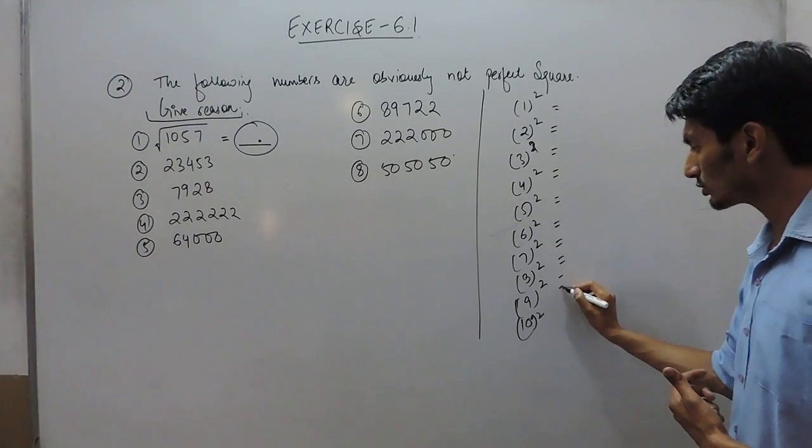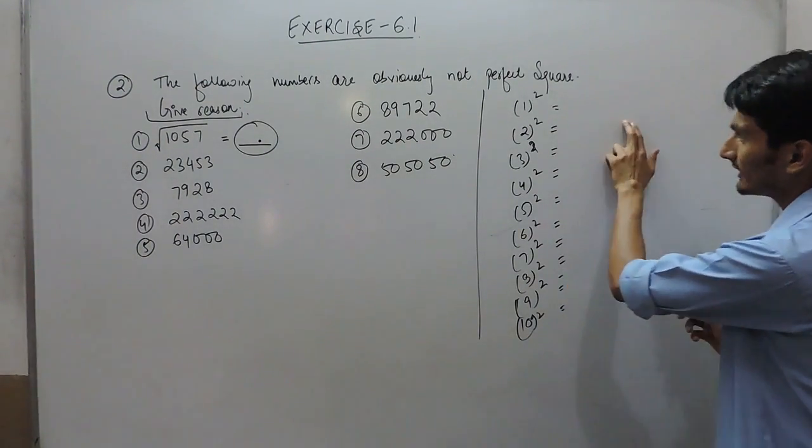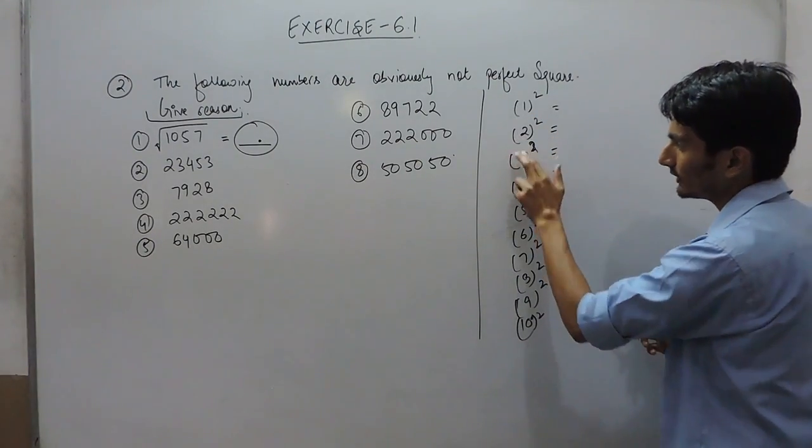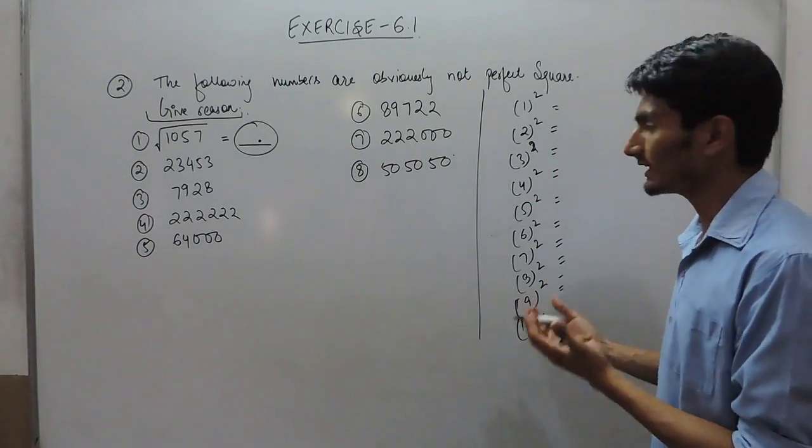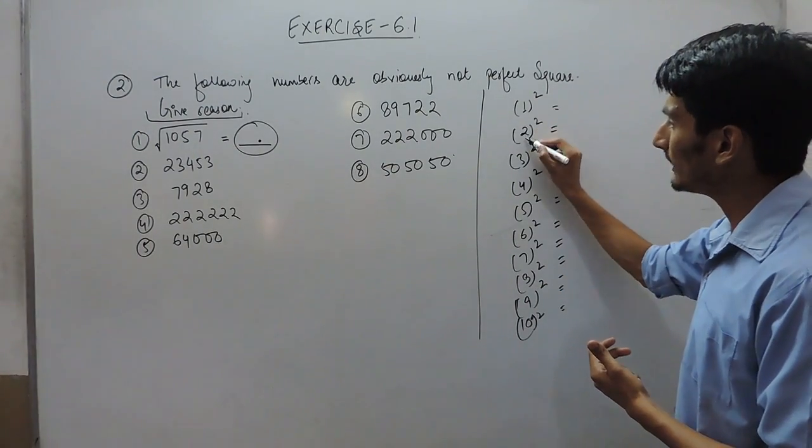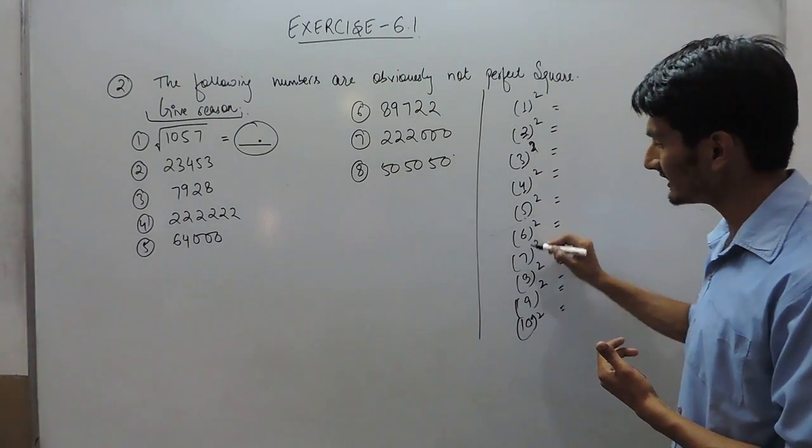One thing we already know is that if any number is squared, its unit digit will depend on only these digits. All perfect square numbers can only have these unit digits.